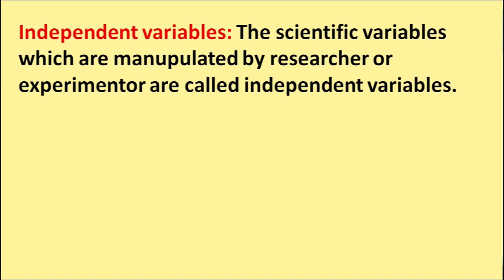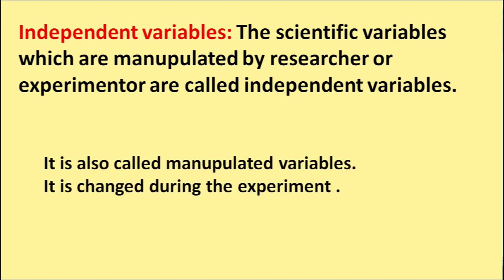Independent variables. The scientific variables which are manipulated by a researcher or experimenter are called independent variables. It is also called manipulated variables. It is changed during the experiment.